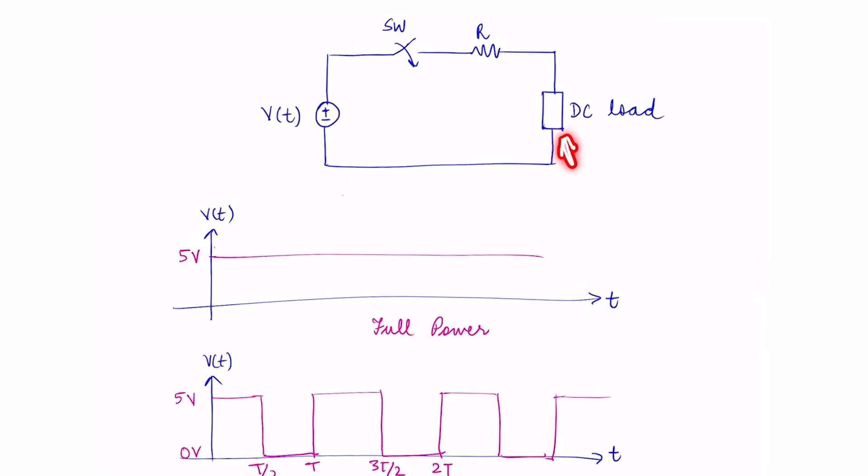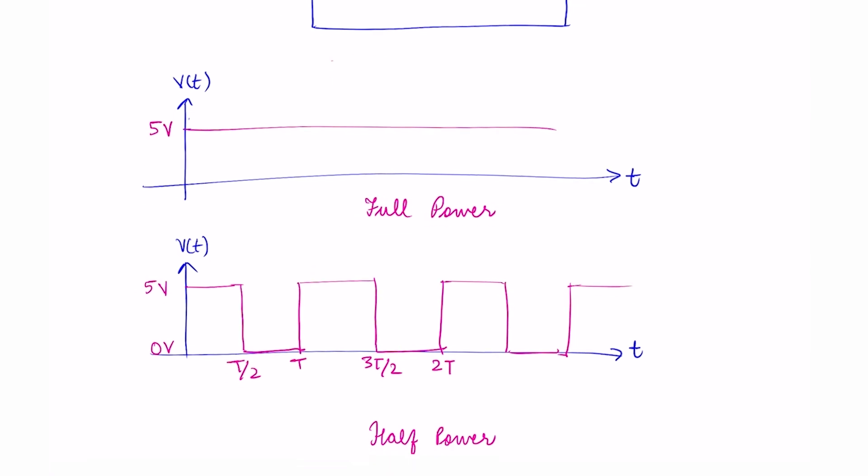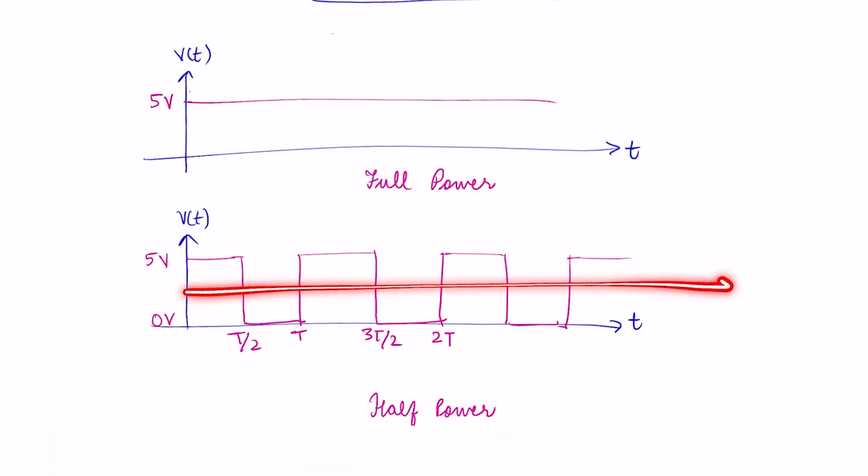If we had some DC load then we would use pulse width modulation to deliver the average power. The duty cycle of PWM wave is adjusted to achieve controlled power with respect to the full scale at 100% duty cycle.